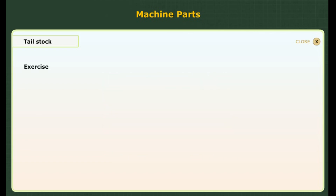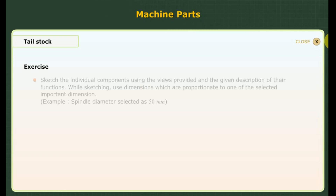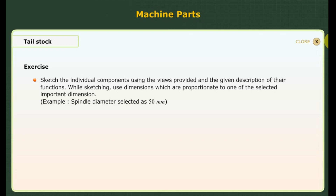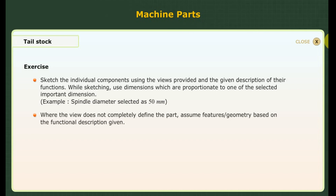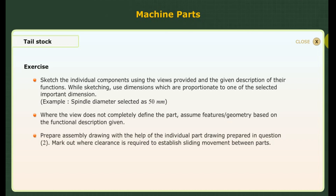Exercise. Let us do an exercise based on the concepts which we have discussed. 1. Sketch the individual components using the views provided and the given description of their functions. While sketching, use dimensions which are proportionate to one of the selected important dimensions. Example: spindle diameter selected as 50 mm. 2. Where the view does not completely define the part, assume features or geometry based on the functional description given. 3. Prepare an assembly drawing with the help of the individual part drawings prepared in question 2. 4. Mark out where clearance is required to establish sliding movement between parts.